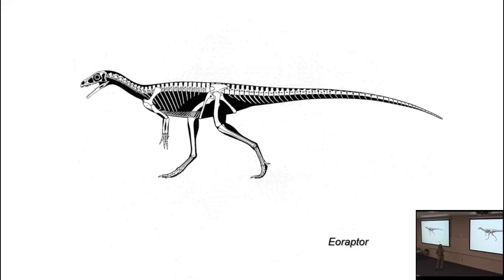Eoraptor gives us a sense of what early sauropodomorphs look like — here's a reconstruction of the whole animal. You'll actually see a specimen, or a cast, at the Smithsonian. The Smithsonian project went live recently, and one of your graded items is to go downtown to the National Museum of Natural History, take a guided tour, make observations, and input answers onto ELMS.